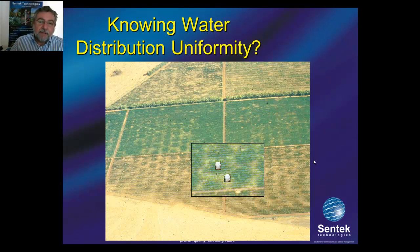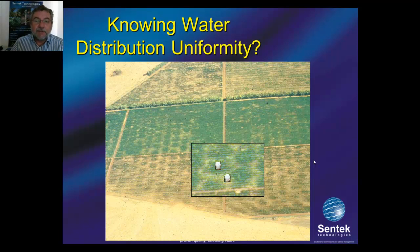If you put it in the dark green area, you might think this person is over-irrigating and get them to wind back. If you put it in the light green area, the irrigation penetrates only 10 centimeters and you think we're not irrigating enough. So that's a dilemma.